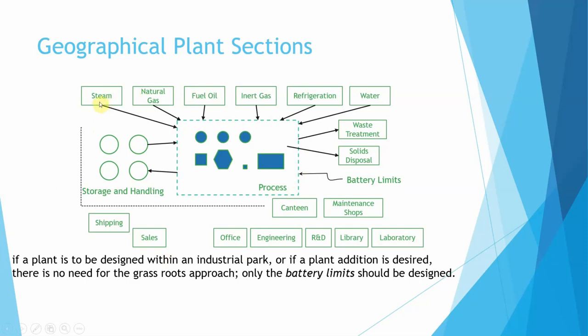If you're doing a grassroots operation, you're going to have to worry about everything. You have to worry about utilities coming in, pay utilities companies to connect you to steam, natural gas, fuel oil, inert gas, refrigeration, water, and all that. You have to pay utilities companies to collect your waste and dispose of solids. You have to build storage facilities, maybe build a train station, put in a library, cafeteria, offices for people.